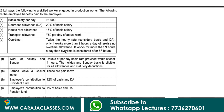If he works for more than 9 hours a day, then overtime is considered after 8 hours. For work on holidays and Sundays, it is double the per day basic rate, provided he works at least 4 hours. The holiday and Sunday basic is eligible for all allowances and statutory deductions.